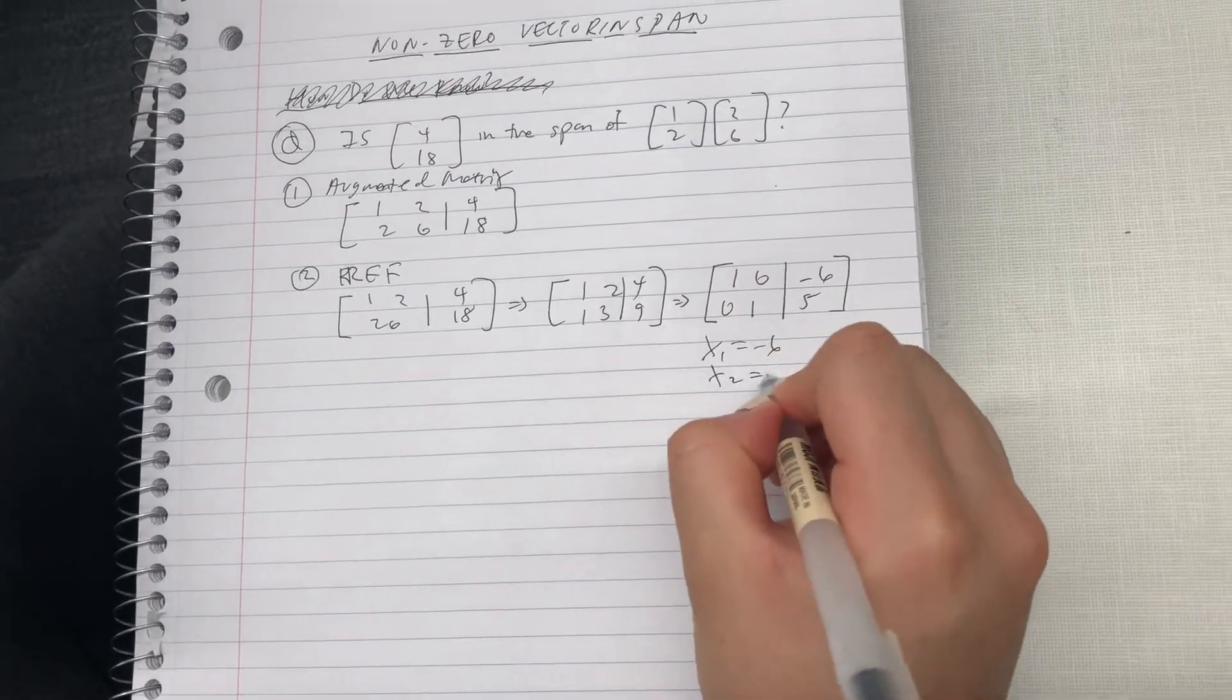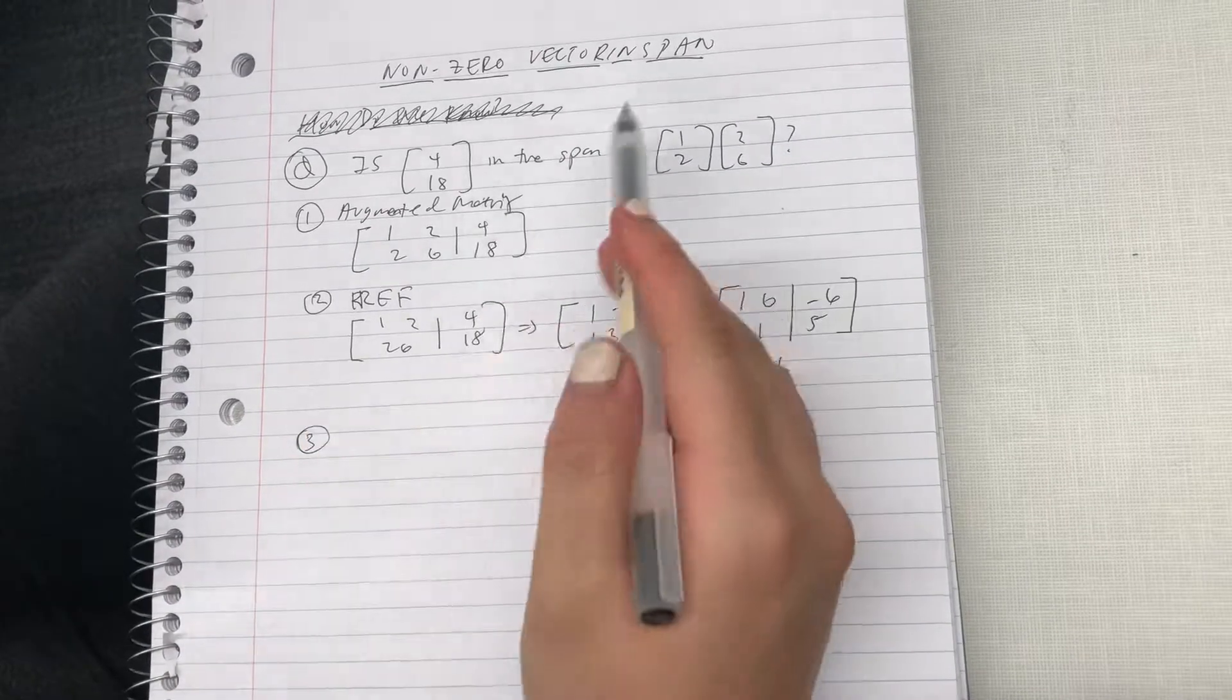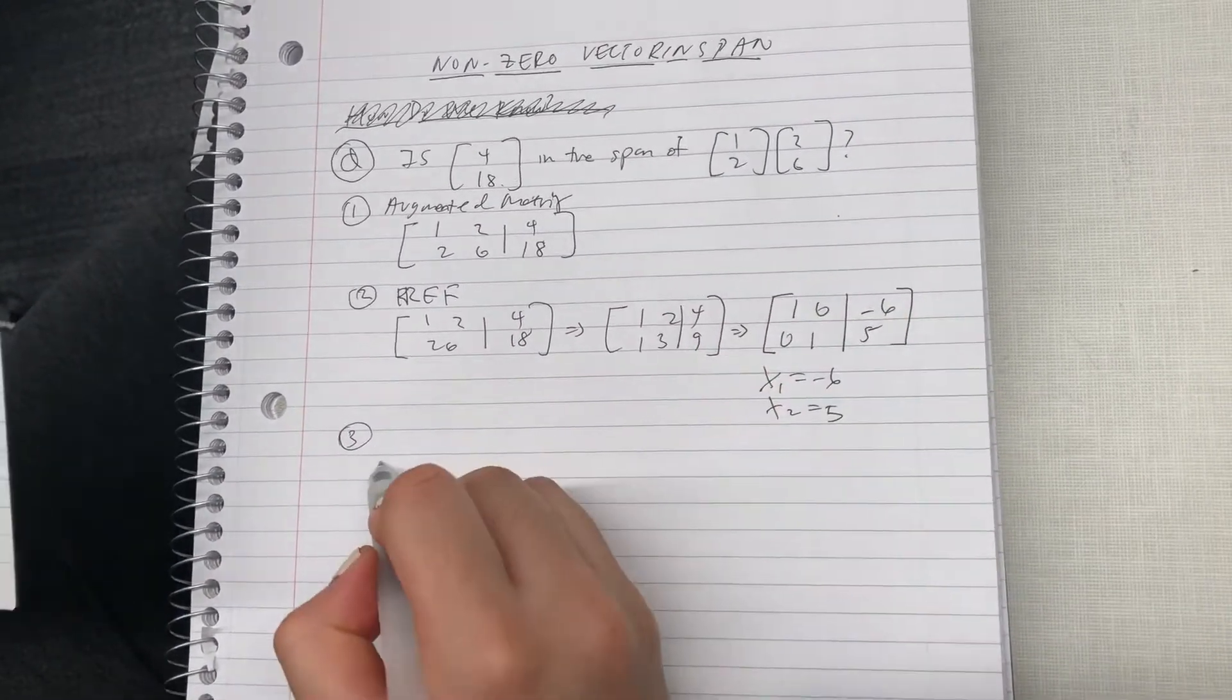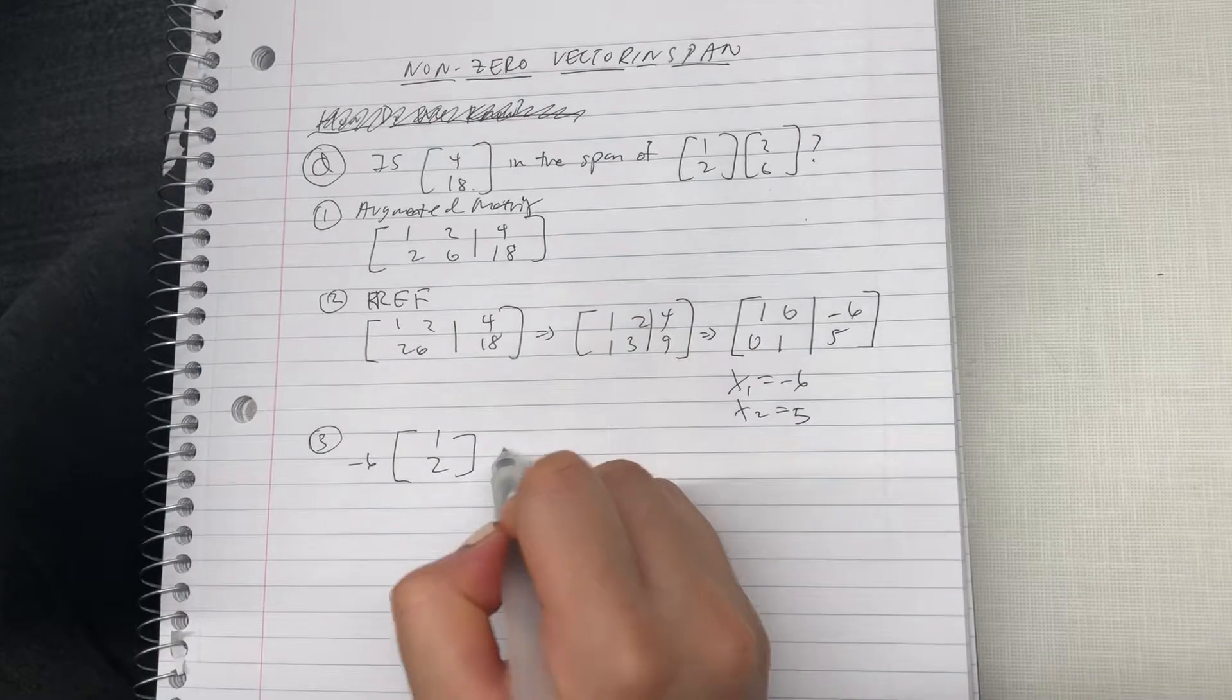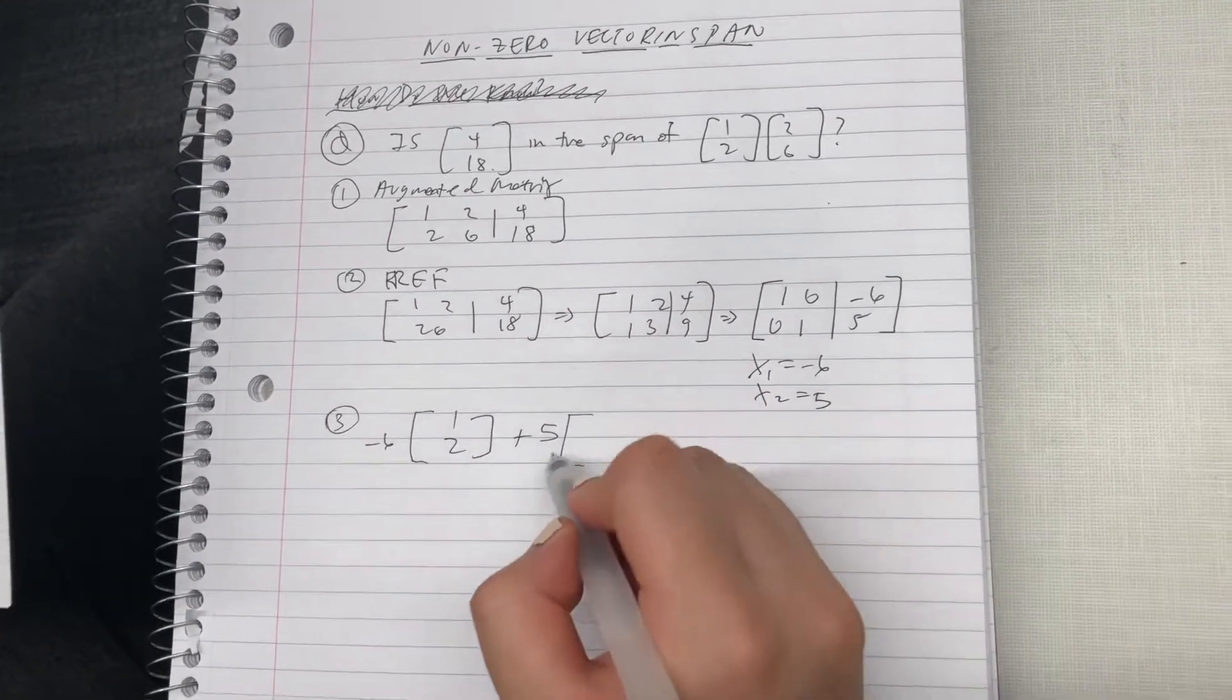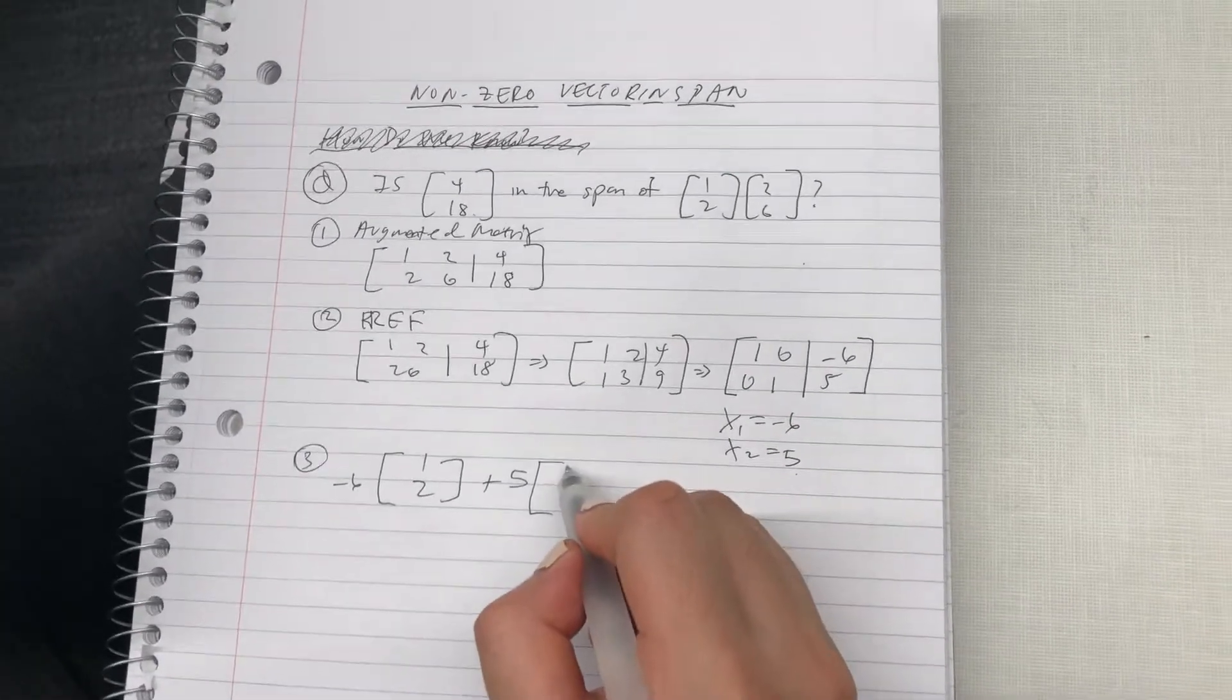And now you have found the coefficients. So to prove that this is truly in the span of these two vectors, we multiply the x1 coefficient with the first vector and add that to the multiplication of the second coefficient with the second vector.